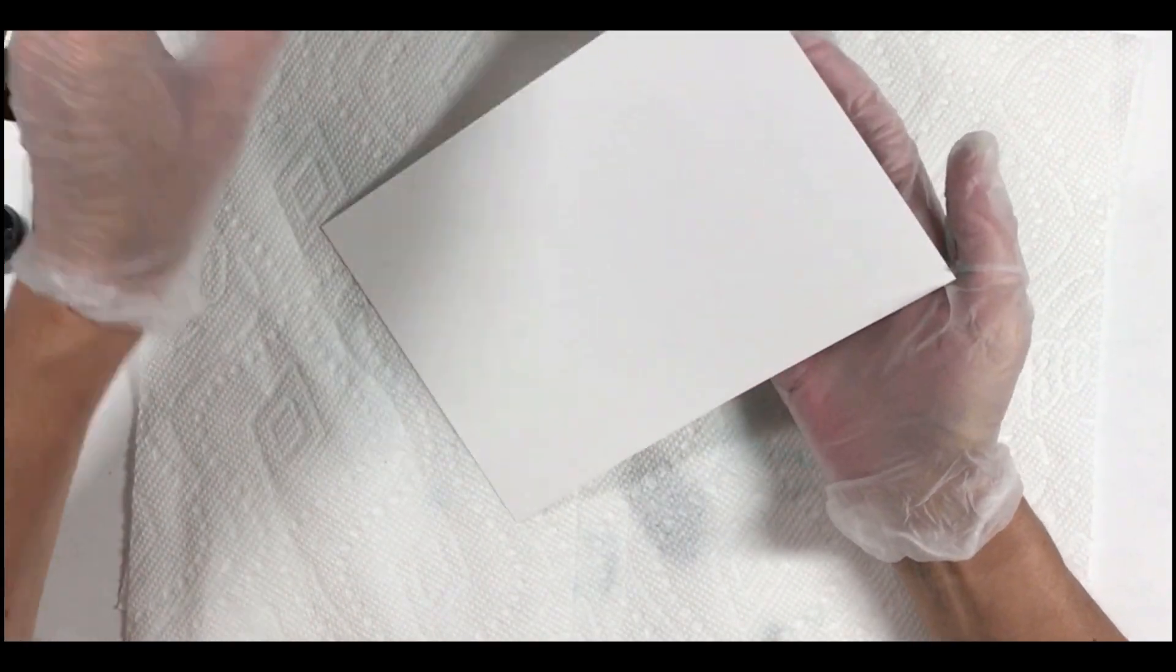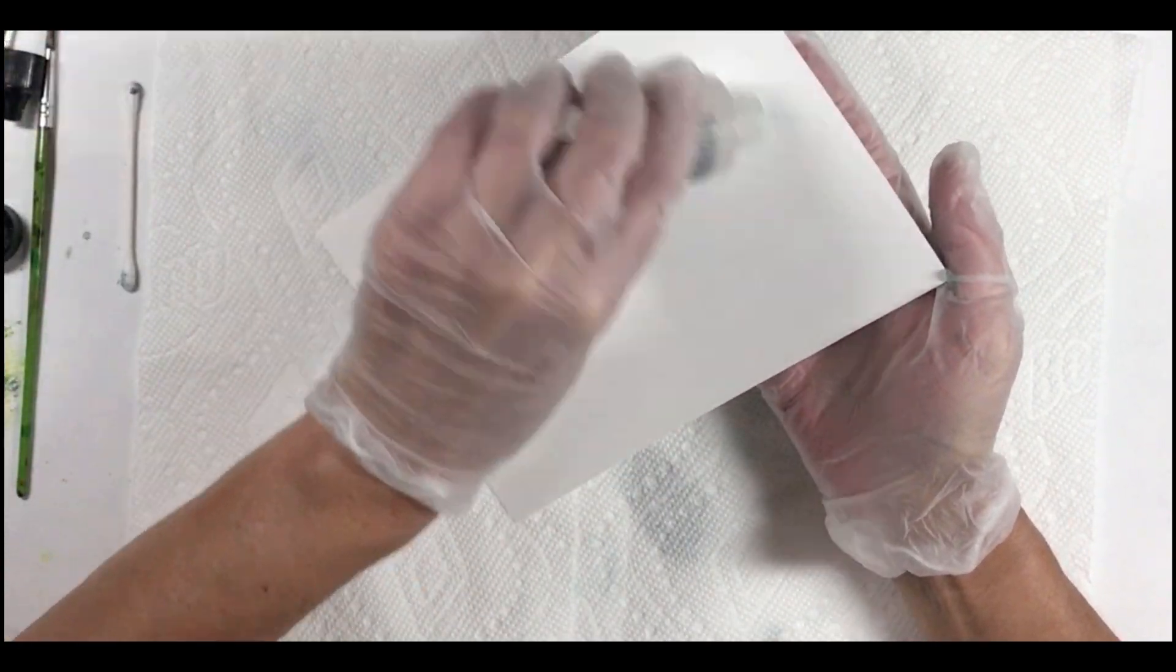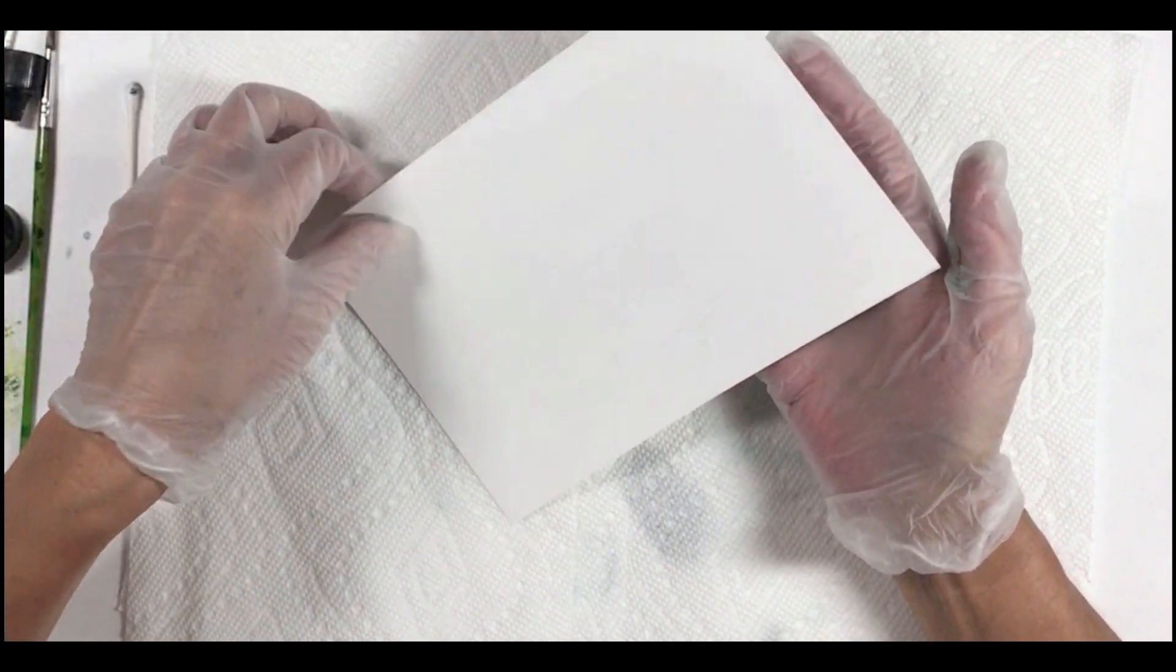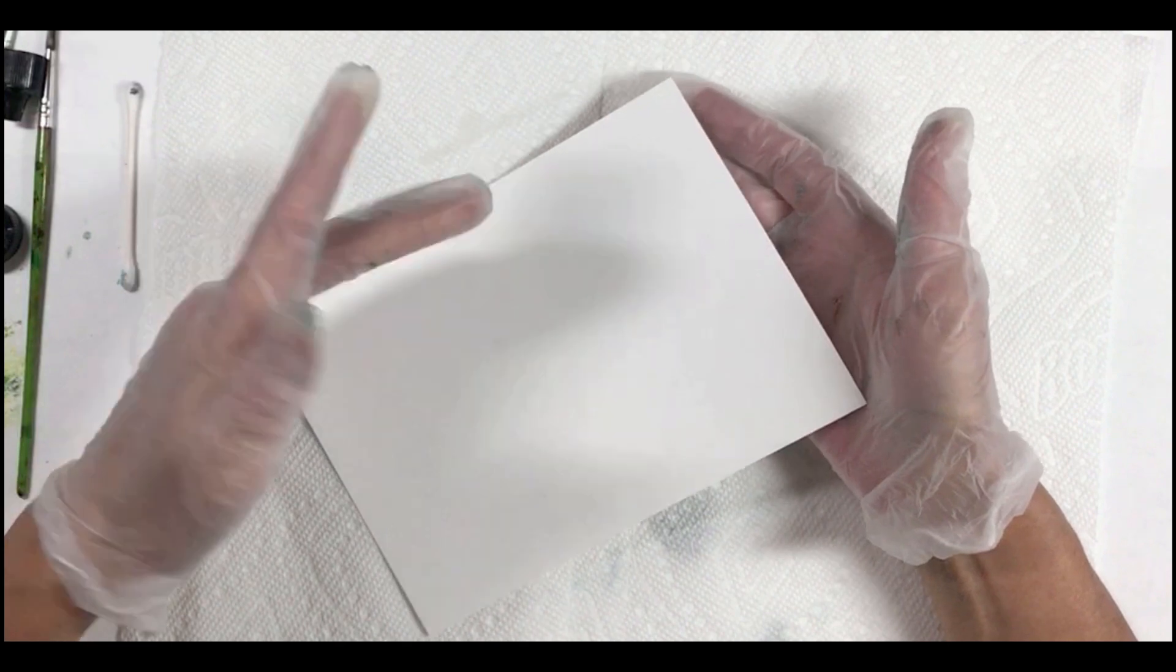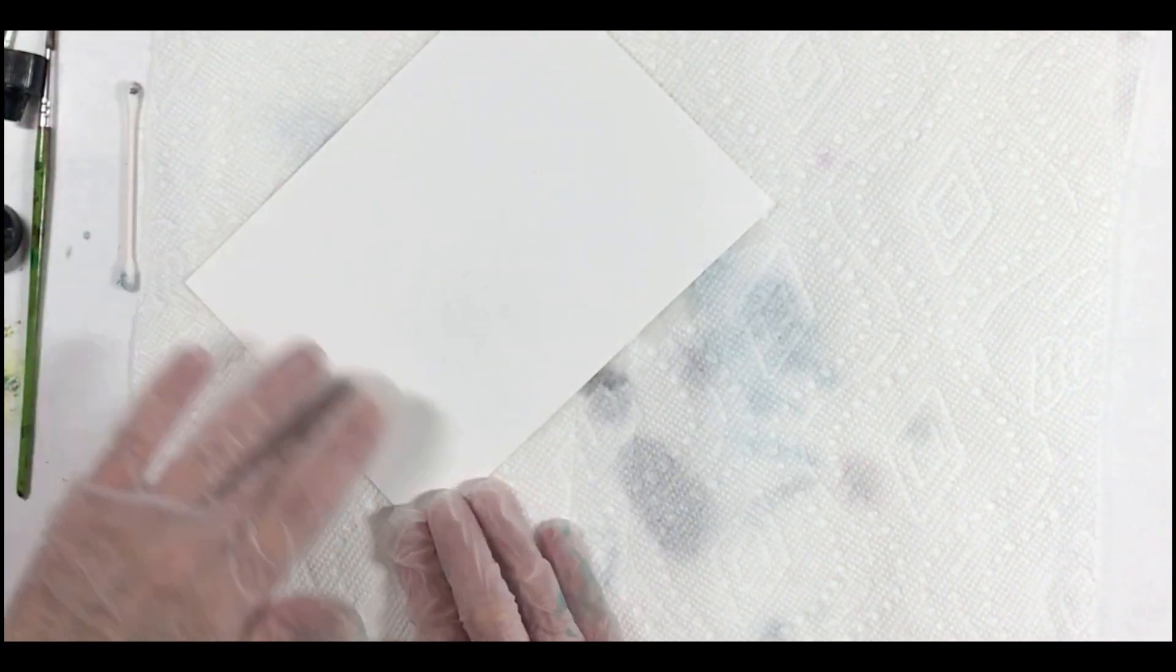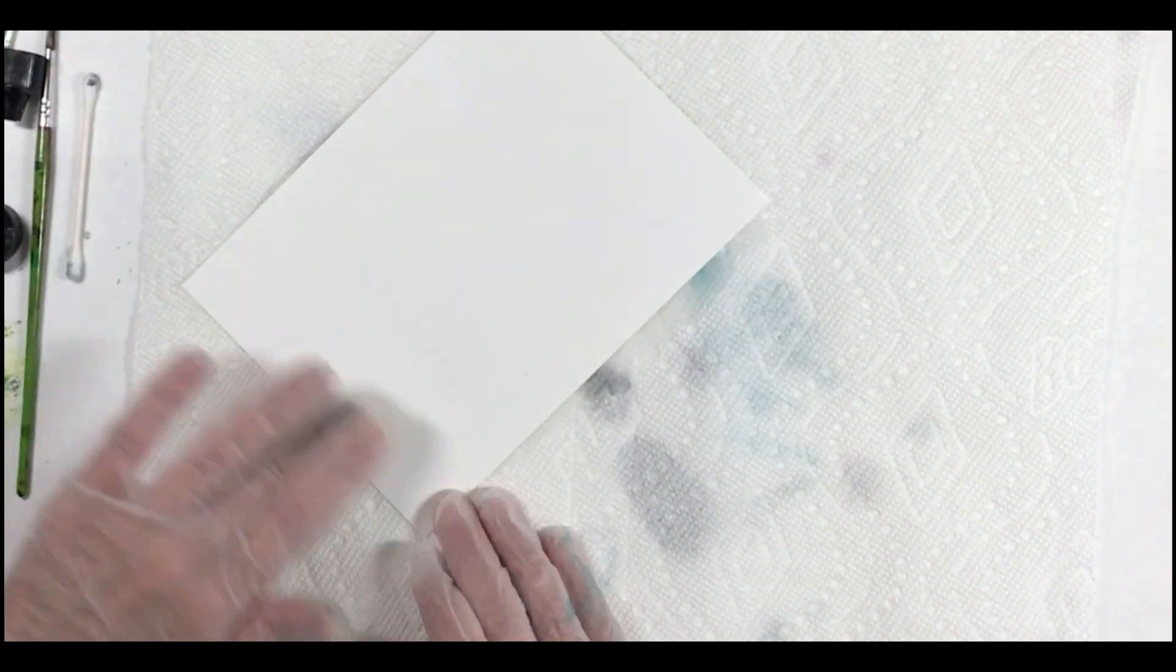We're going to start with a piece of 5x7 Yupo and put some of that blending solution all over the page so that we can prepare to lay down our inks. I'm going to take my hand and just move that all around so I'm sure that that page is totally wet.